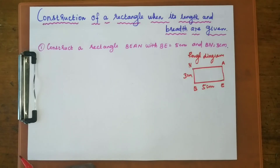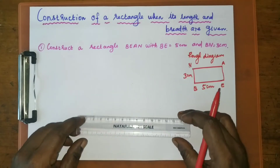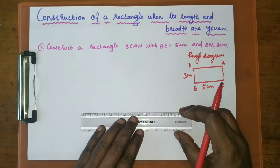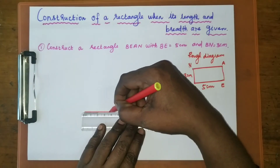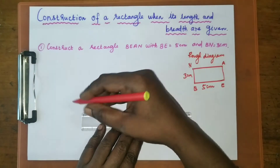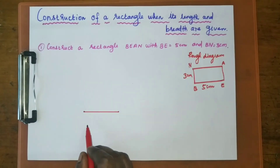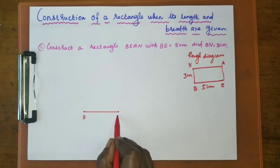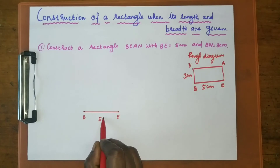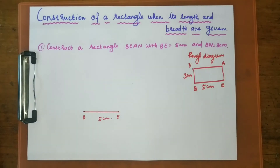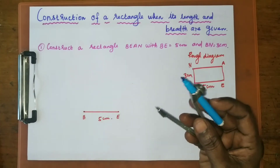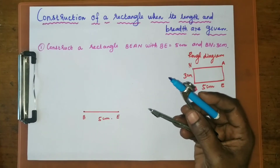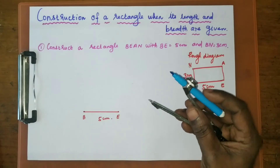First, we have to draw one line segment of 5 centimeters. That is BE — just draw one line segment for 5 centimeters and name it BE. Now we have to construct a 90-degree angle at either B or at E.